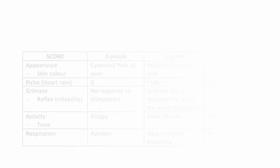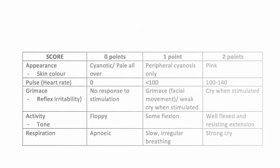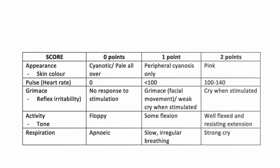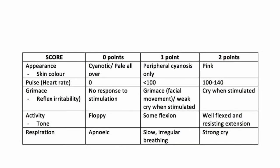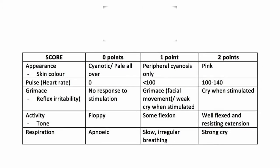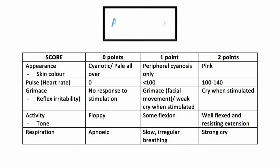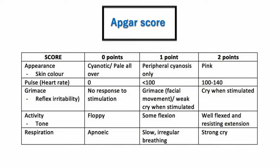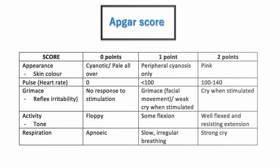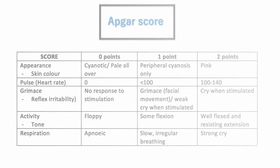APGAR score: a test given one minute after a baby is born, then again five minutes later, that assesses a baby's Appearance (skin color), Pulse (heart rate), Grimace (reflex), Activity (muscle tone), and Respiration. A perfect APGAR score is 10; typical scores are 7, 8, or 9. Less than 7 indicates the baby might need help breathing. We will see detail about the APGAR score in another video.